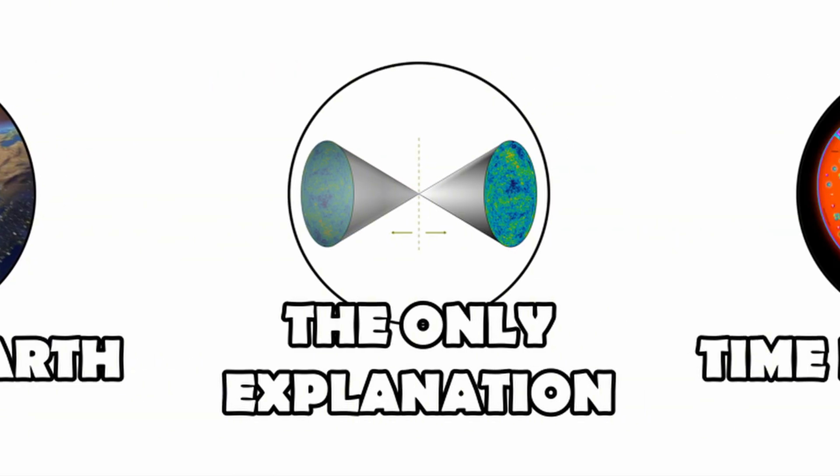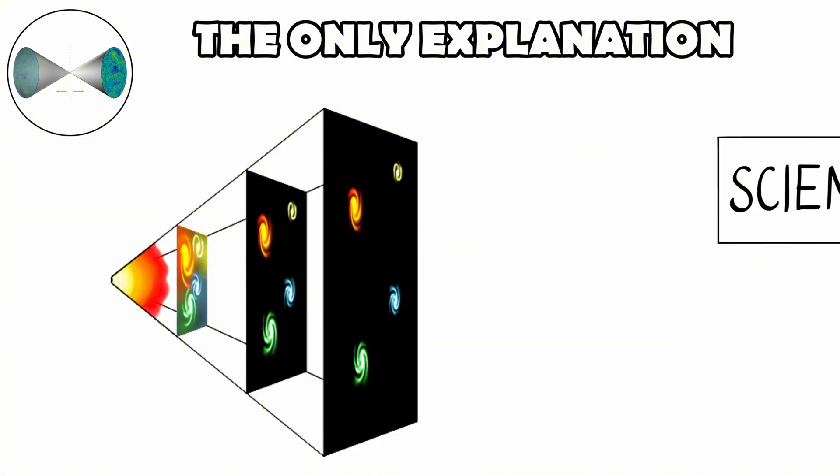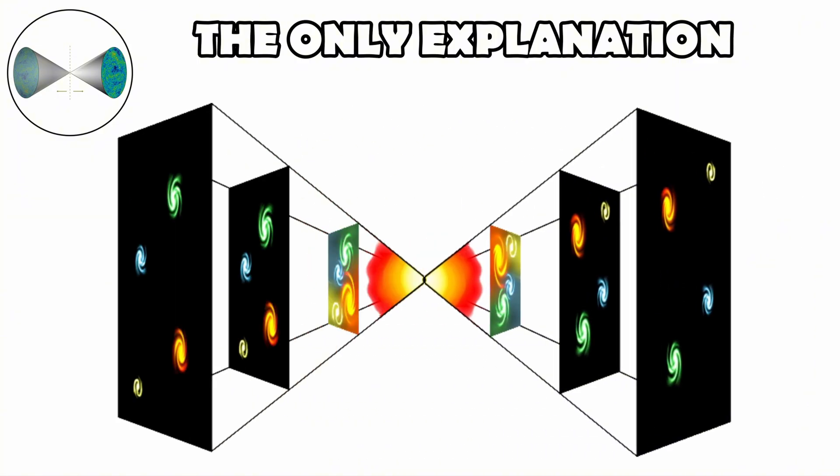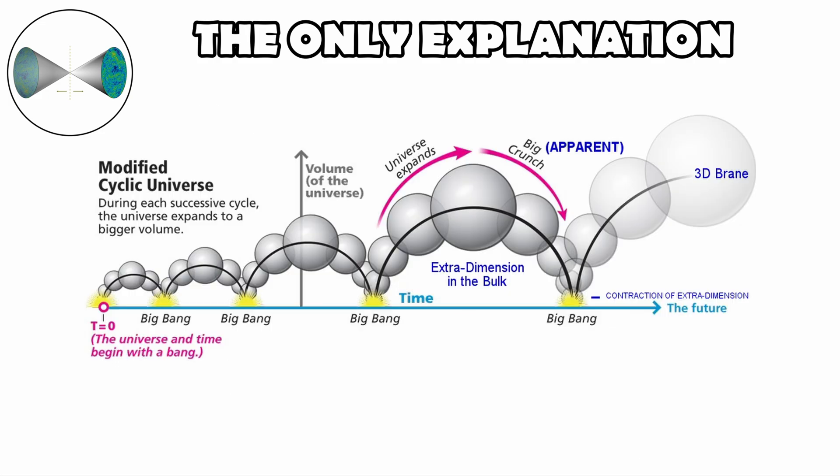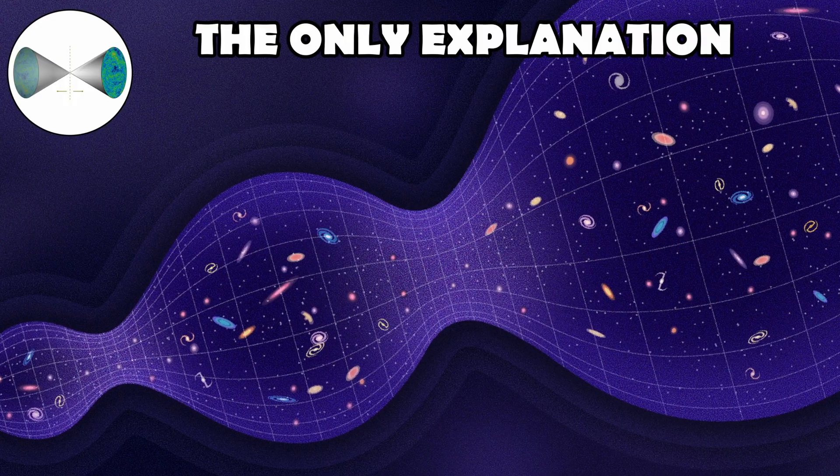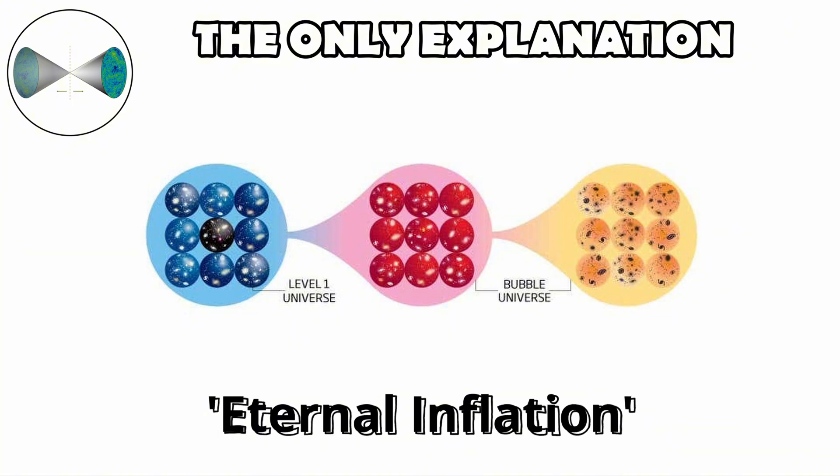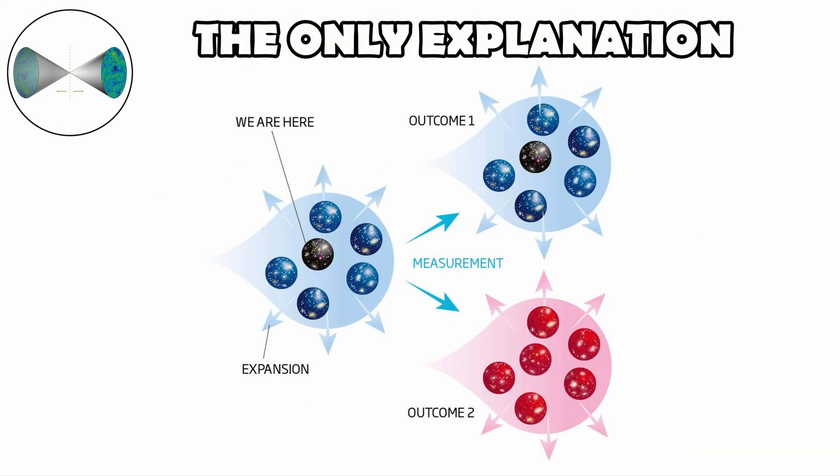The Only Explanation. While the Big Bang is the leading explanation, it is not the only one scientists explore. Science always keeps the door open to alternatives, as long as they can be tested against observations. One alternative is the bouncing universe model, where expansion is not the first event but the result of a previous contracting phase. Another is eternal inflation, which suggests our universe is just one bubble in a larger multiverse, each bubble with its own laws of physics. Cyclic cosmologies propose that universes may go through endless rounds of birth, expansion, collapse, and rebirth.